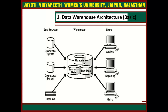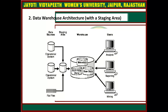Next, the second architecture is Data Warehouse Architecture with a staging area. In this figure, you need to clean and process your operational data before putting it into the warehouse. You can do this programmatically, although most data warehouses use a staging area instead. A staging area simplifies building summaries and general warehouse management.